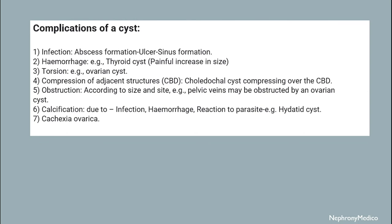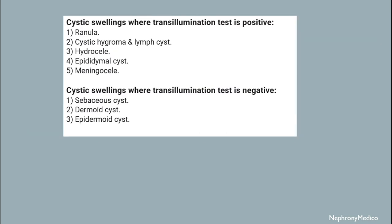Complications of a cyst include infection leading to abscess formation, ulcer and sinus formation, hemorrhage, torsion, compression of adjacent structures, obstruction, and calcification. Calcification may occur due to infection, hemorrhage, reaction to parasites, or cachexia ovarica.